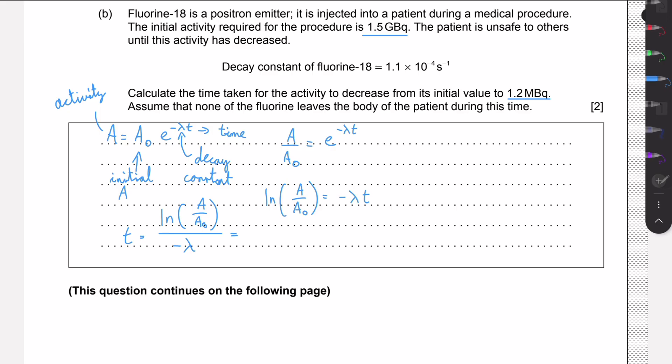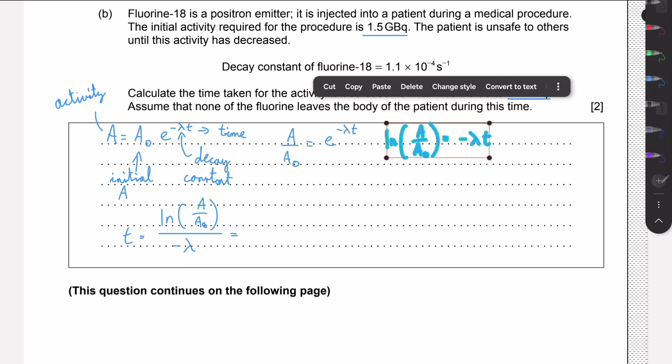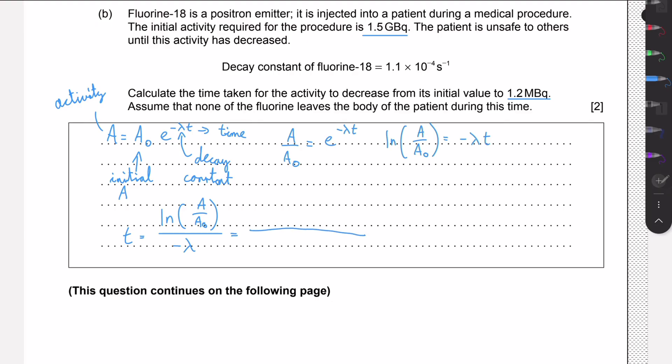Now we need to plug all of this in. It's important as the last step to mind the units. At the start we have giga becquerel, and at the end we have only mega becquerel. There's not only from 1.5 to 1.2, but there's also a factor of 1,000. We want a becquerel of 1.2 times 10 to the 6. Initially we had 1.5 times 10 to the 9 becquerel. I converted both to becquerel so we can do the division. This is 1.1 times 10 to the minus 4 per second.